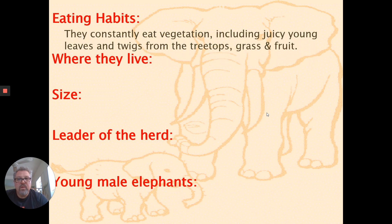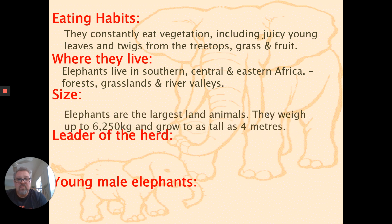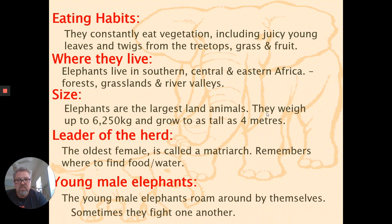Your answers may be worded differently but should include these ideas. Eating habits: they constantly eat vegetation — juicy young leaves and twigs from treetops, grass, and fruit. They live in southern, central, and eastern Africa, in habitats of forests, grasslands, and river valleys. For size: they're the largest land animals, with their specific weight and height. The leader is the oldest female called a matriarch — she remembers where to find food and drink. Young male elephants roam around by themselves and sometimes fight each other.